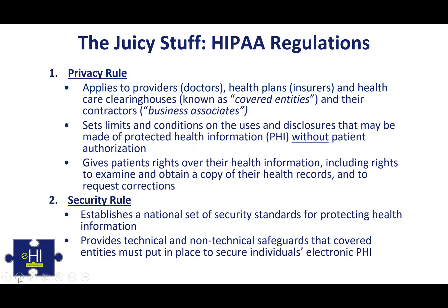The Privacy Rule sets the limits and conditions on the uses and disclosures of what is called Protected Health Information, or PHI, without patient authorization. When a patient consents to the use or disclosure of their health information, really anything is permissible. The Privacy Rule also sets forth important individual rights, including the right to examine or obtain a copy of your health record and to request corrections once you've seen it.